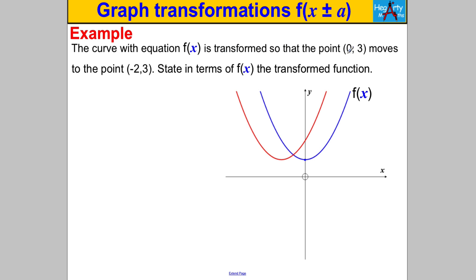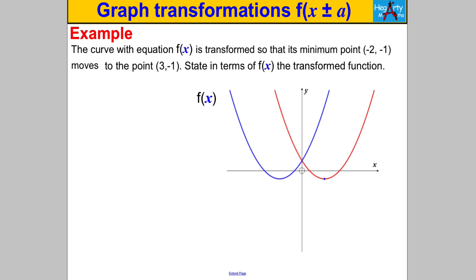Have a go at another one — pause the video and have a think. We're told the curve f(x) is transformed so that the point (0, 3) moves to the point (-2, 3). The function has moved to the left by 2 units. Remember, if we're moving to the left it must be f(x+2) — adding 2 inside the brackets makes us move to the left by 2 units. So the transform function is f(x+2).